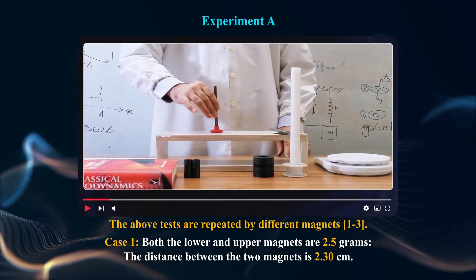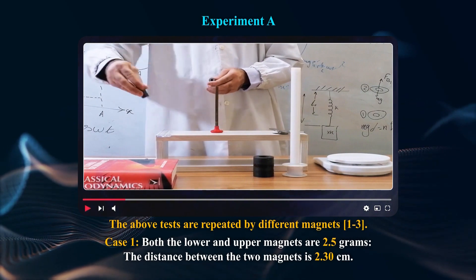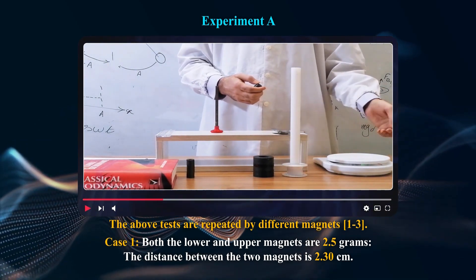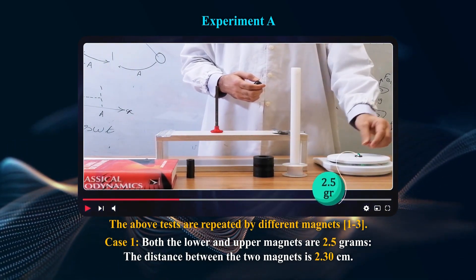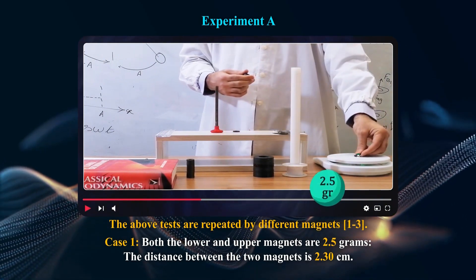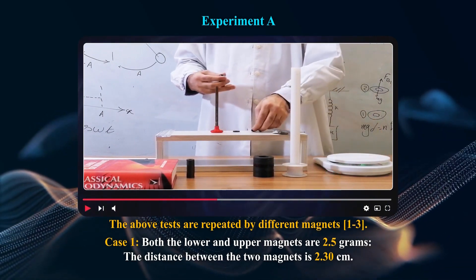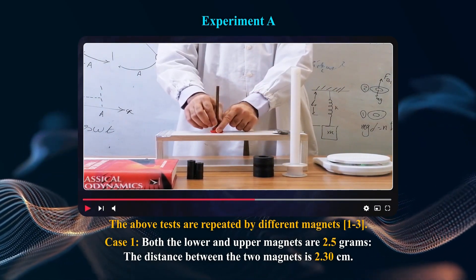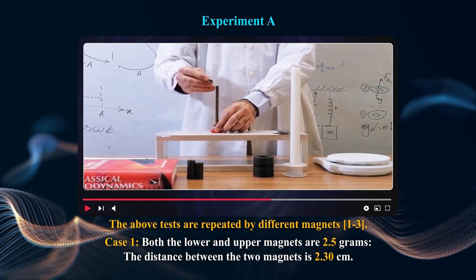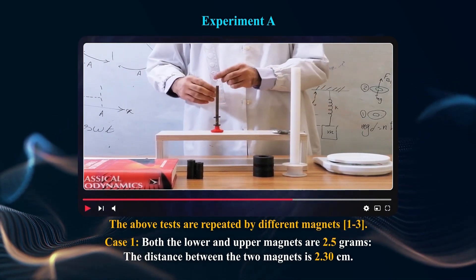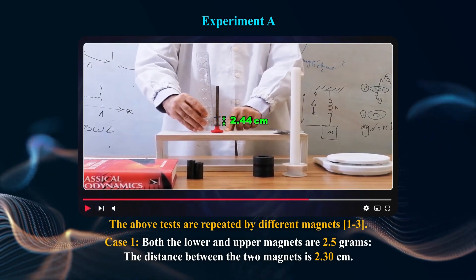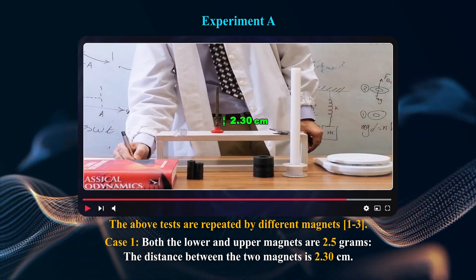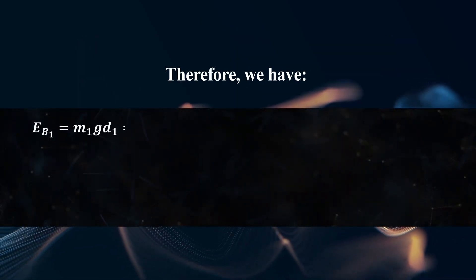The above tests are repeated with different magnets. Case 1: Both the lower and upper magnets are 2.5 grams. The distance between the two magnets is approximately 30 cm. Therefore, we have the corresponding calculated values.